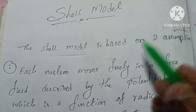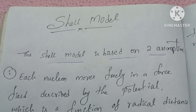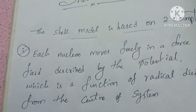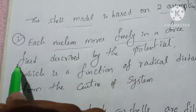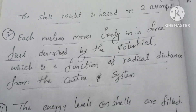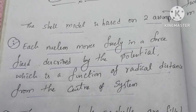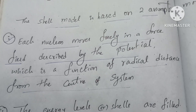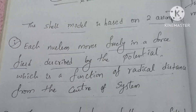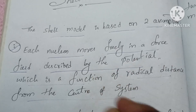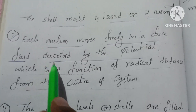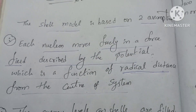The shell model is based on two assumptions. Each nucleon in the nucleus is free to move, and it is described by a potential which is a function of radial distance. The radial distance is measured from the center of the system.